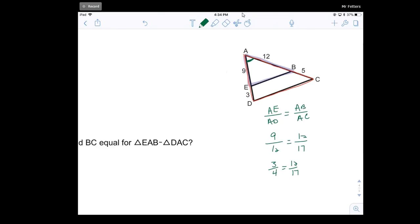Well, 17 is a prime number. I can't reduce that. So does three fourths equal 12 over 17? And the answer to that is no.